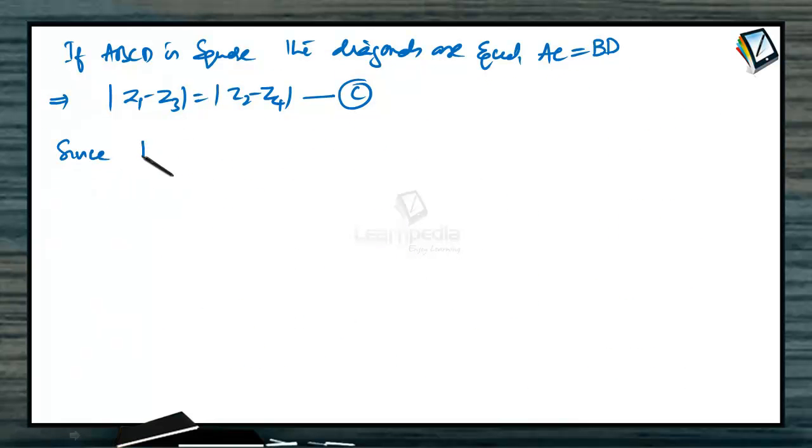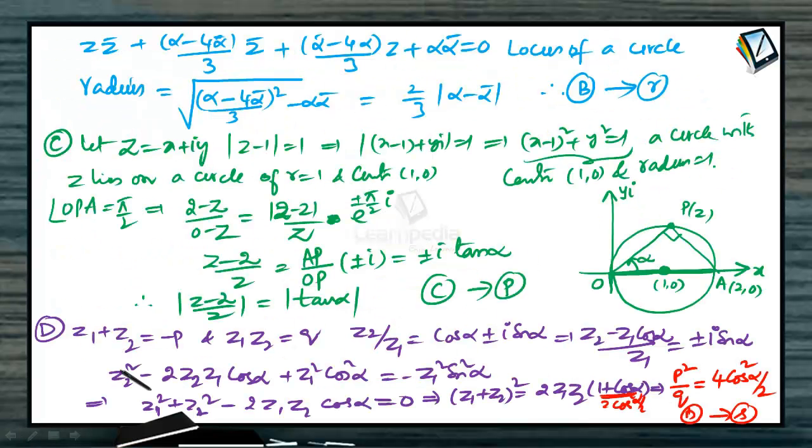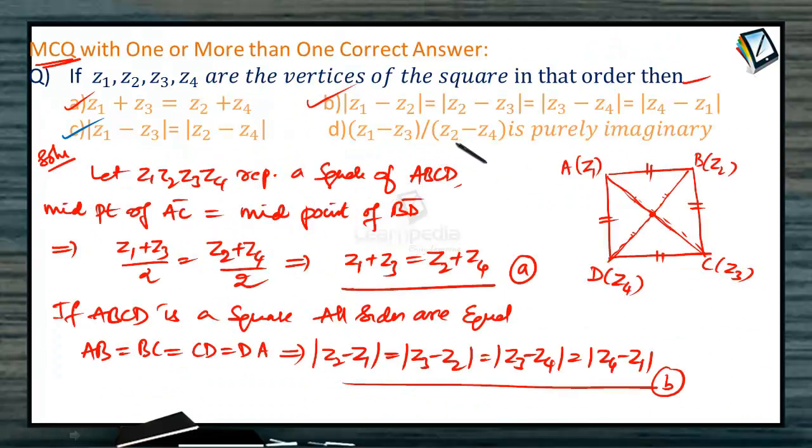And finally, since diagonals are perpendicular in ABCD, then we have AC is perpendicular to BD. When AC is perpendicular to BD, obviously Z1 minus Z3 by Z2 minus Z4 becomes purely imaginary from the definition. So obviously this option is also there. Option D is also correct: Z1 minus Z3 by Z2 minus Z4 is purely imaginary.